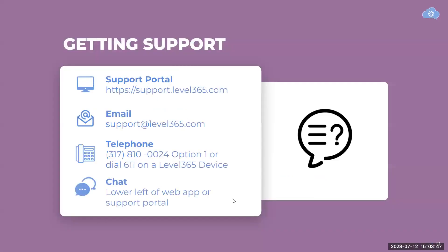To contact our support, we have a support portal at support.level365.com. That houses our knowledge base, which we are revamping right now. We hope to have that completed in the next couple months. You can also reach us at our email address support.level365.com, or by telephone at 317-810-0024, option 1. From any Level 365 device — web phone, mobile app, or desk phone — dialing 611 will also get you directly to us.